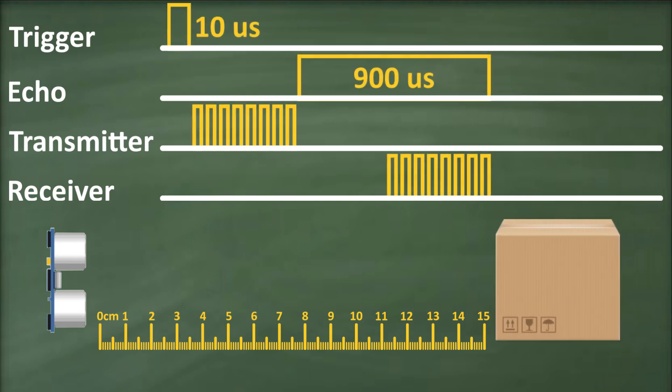Suppose we receive a pulse of 900 microseconds width on the echo pin. We can calculate the distance using the familiar speed formula: speed equals distance divided by time. Rearranging this formula, we find that distance equals speed multiplied by time.